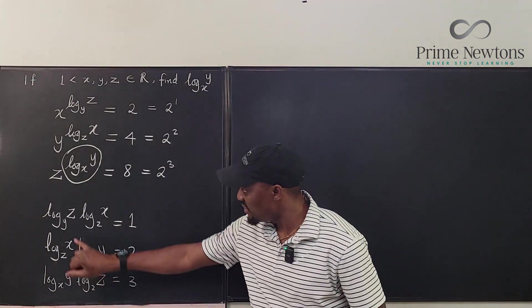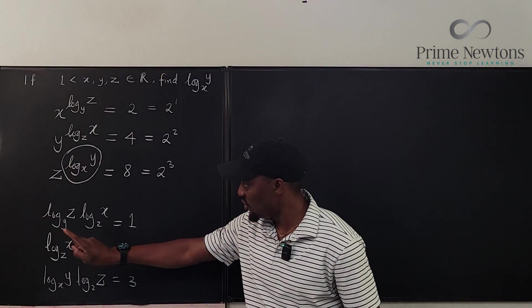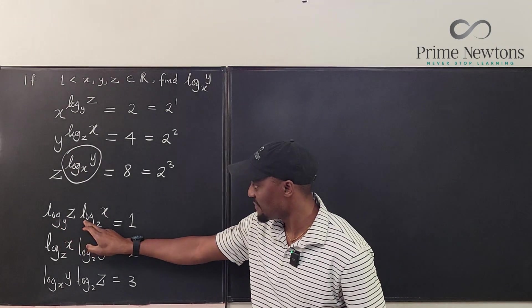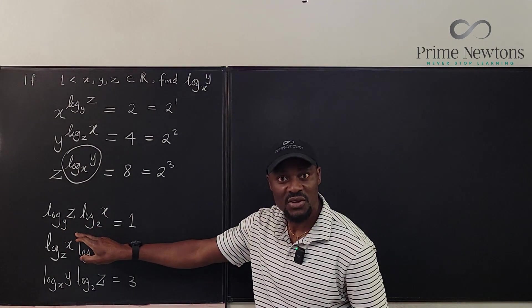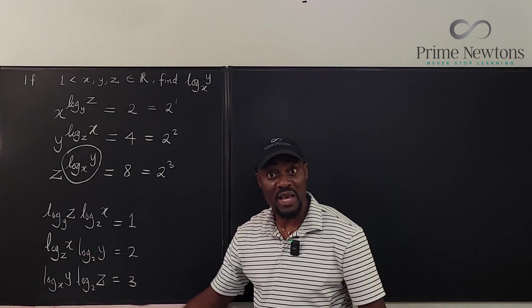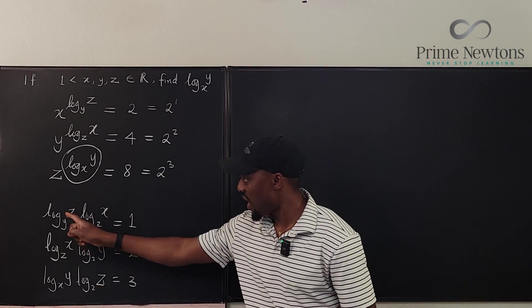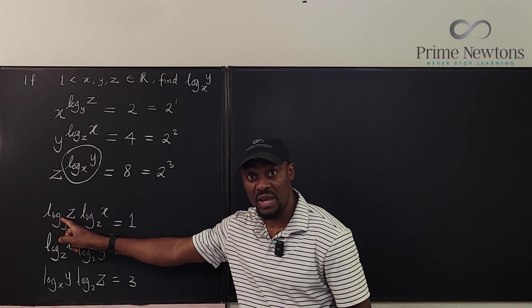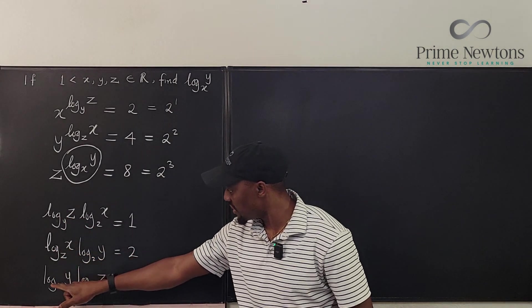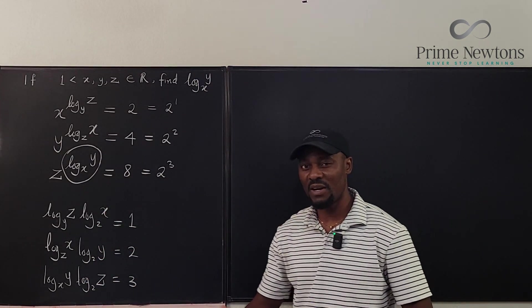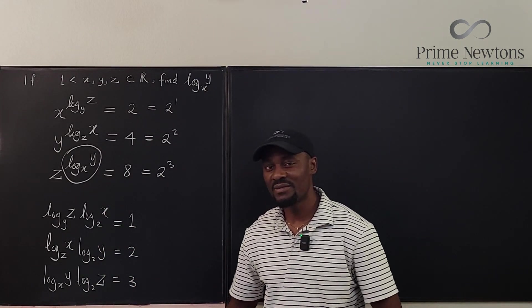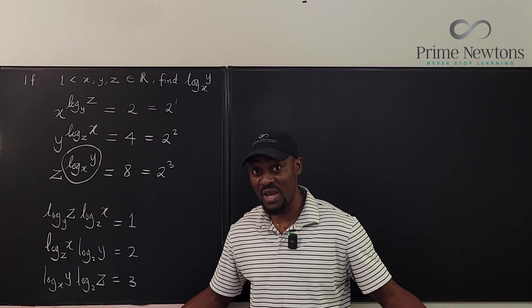However, there is no possible manipulation between this and this because the bases are different. But we can make all the bases the same so that we can write this in terms of log base 2, log base 2, log base 2. We already have log base 2 here and we just have a common family of expressions. So everything will now be in base 2.